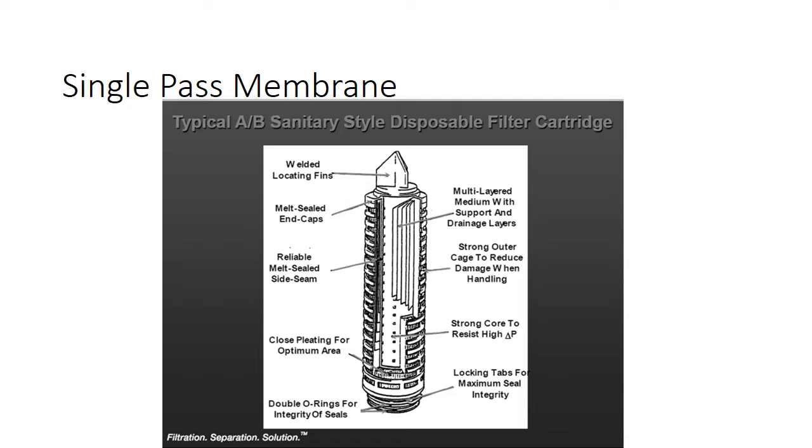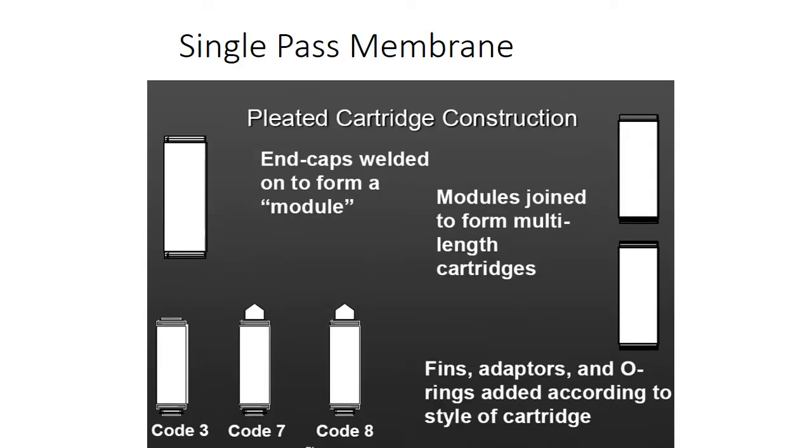So these are typical sanitary membranes. This is the way they look. You can read this as quick as I can. Basically, plastic on the outside, pleated paper on the inside. And then there's different codes. Most wineries use code 7. But it's important to know which one you have because that's what kind you need to buy.